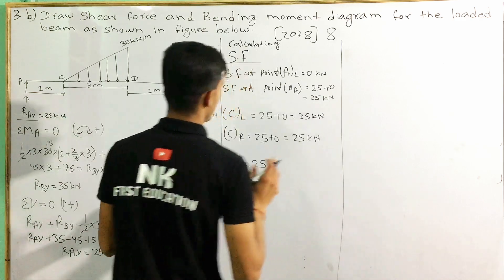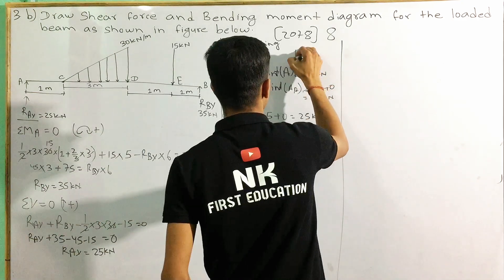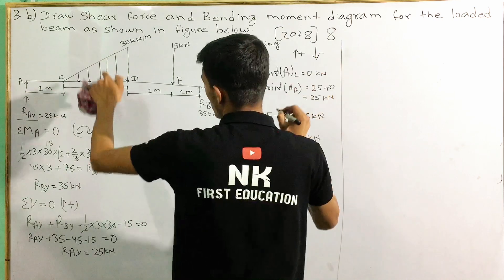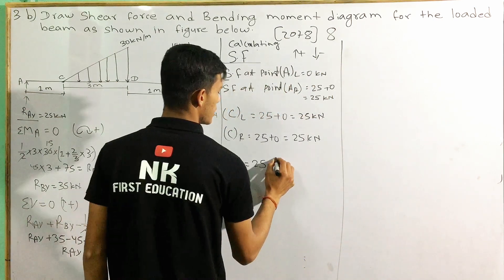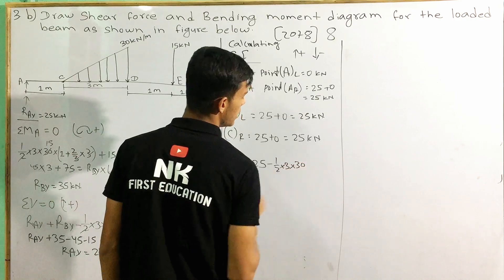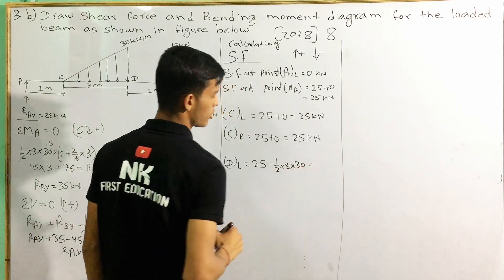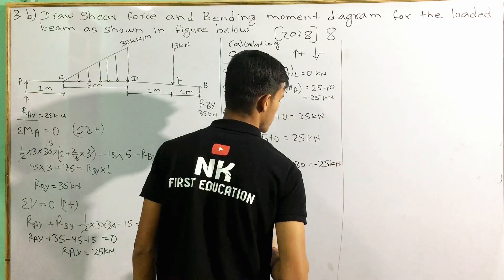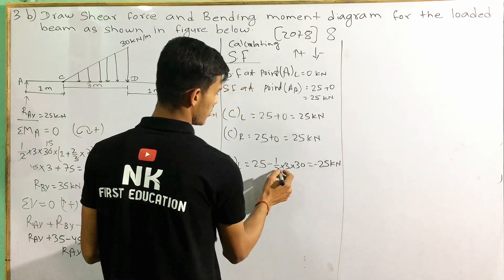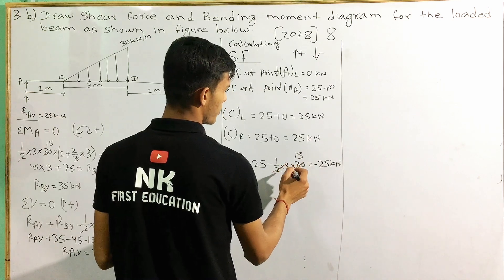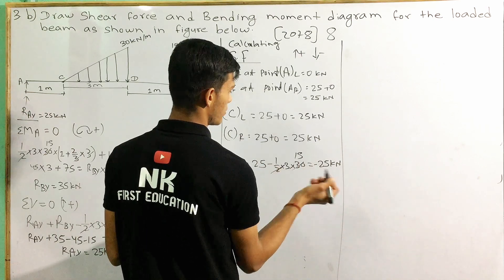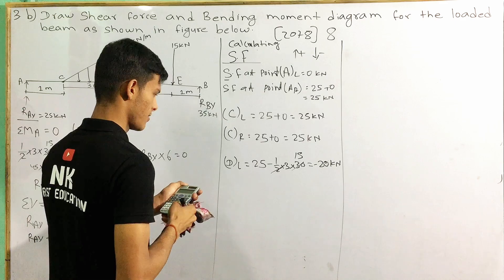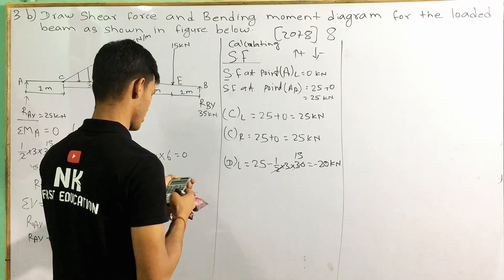If you look at the load, the load is negative. This is 1 by 2 times 3 into 30. So we have 25 minus 45 equals minus 20, and then 25 minus 45 plus 25 — 45 minus 25 is equal to 20.